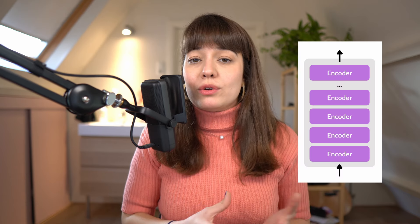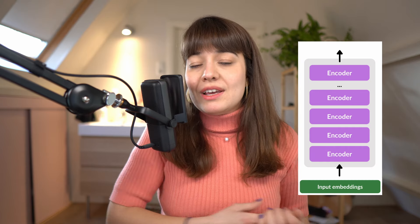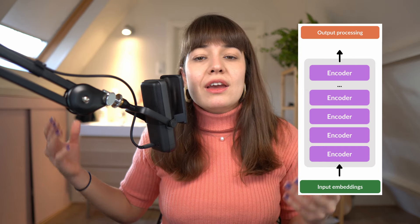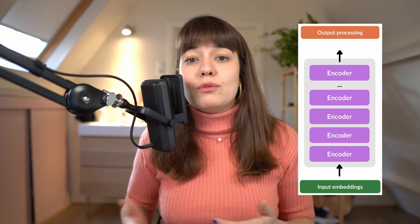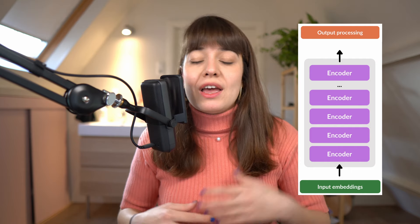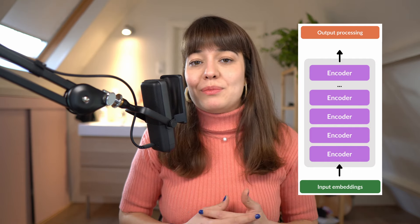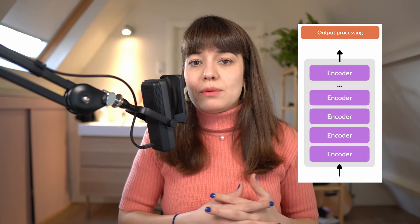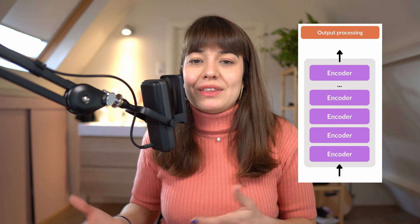BERT is of course not only a stack of encoders in terms of architecture. It needs a way for the inputs to be embedded and a way for the output to make sense. So you might have different types of layers after the output of your encoders, and different types of inputs based on what you're inputting to the model. The output style will change based on what you're training BERT on, or what you're doing the fine-tuning with.